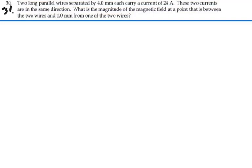Here's problem 30-30. Two long parallel wires separated by four millimeters each carry a current of 24 amps. These two currents are in the same direction. What is the magnitude of the magnetic field at a point that is between the wires and one millimeter from one of the two wires?